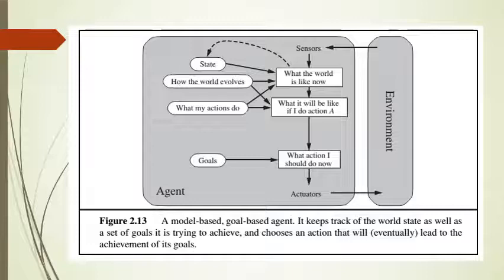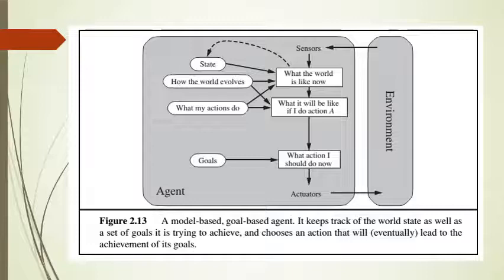The goal based agent structure shows sensors sending information to a block describing what the world is like now. It considers how the world evolves, what actions do, and what it will be like if a certain action A is performed. It defines a goal and chooses actions that will eventually lead to the achievement of that goal, combining perception history, current perception state, and goal information.